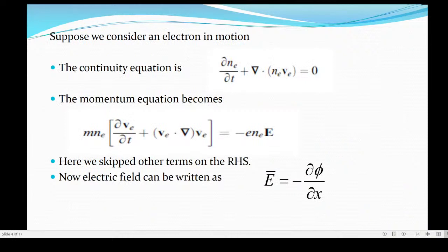Suppose you consider an electron in motion. The continuity equation for an electron is del n del t plus divergence of n into v equals 0. We assume that there is no source term on the right hand side.